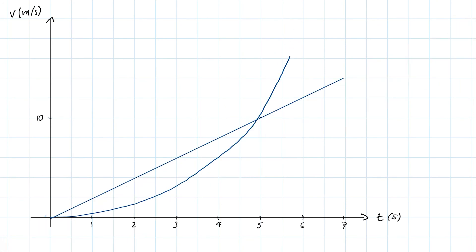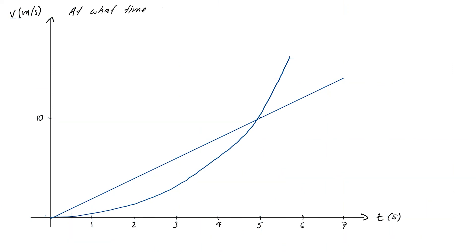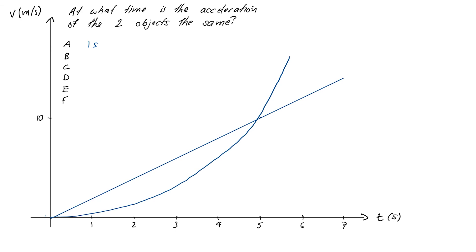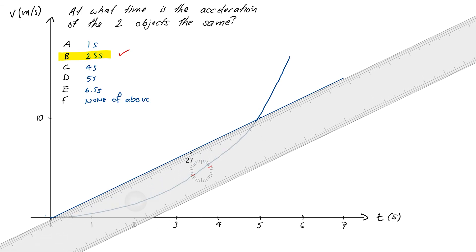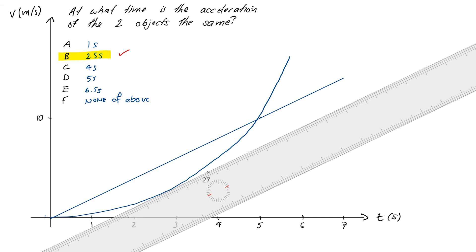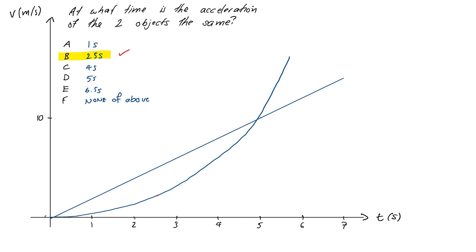Finally, consider a graph showing velocity time curves for two different motions. At what time are the two accelerations equal? Options: A = 1 s, B = 2.5 s, C = 4 s, D = 5 s, E = 6.5 s, F = none of the above. Pause the video and figure out the answer. The acceleration is the slope of those curves, and the slopes look equal at 2.5 seconds — so the answer is B. At 0 and near 5, the velocities are the same but not the accelerations, because accelerations are the slopes.